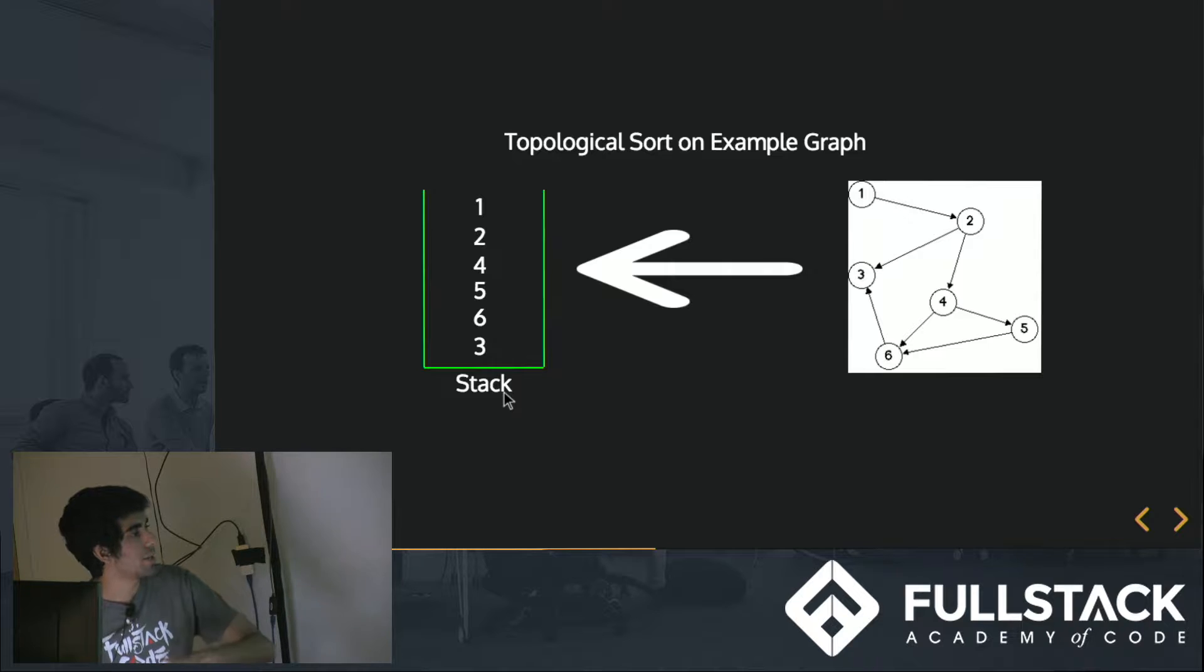We can go back to its parent, 6, and 6's child 3 has already been added to the stack, so we can add 6. Then 6's parent 5, we can add 5 to the stack because 6 has already been added. And then we can go back to 4, and 5 and 6 have already been added to the stack, so we can add 4, and then we can add 2, and then we can add 1.